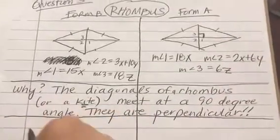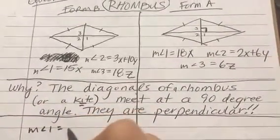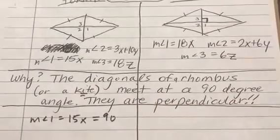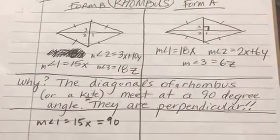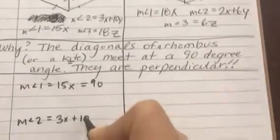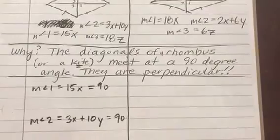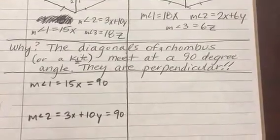So knowing that, if you get an expression for any of these angles, they all have to be 90. So to solve this question, we know the measure of angle 1 is 15x, which is equal to 90. The measure of angle 2 is 3x plus 10y, which we know is equal to 90. And the measure of angle 3 is 18z, which is equal to 90.